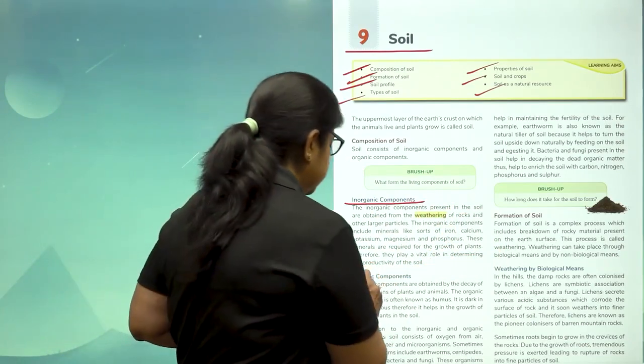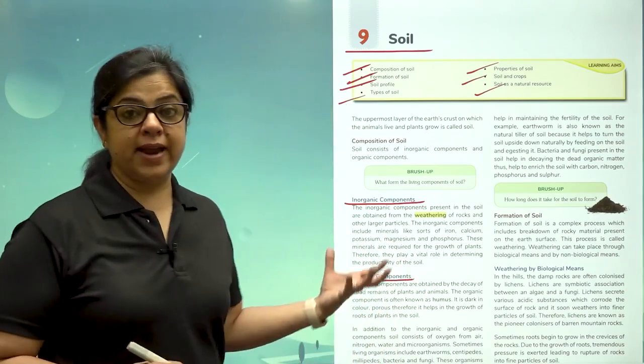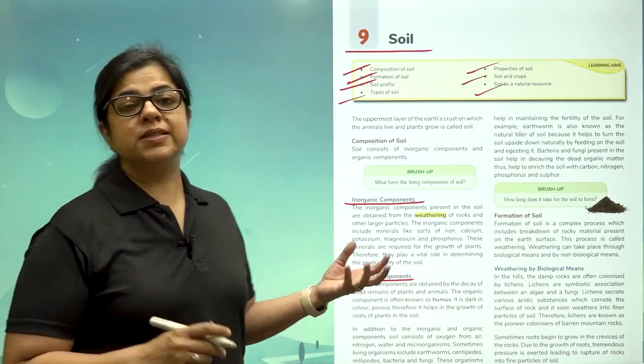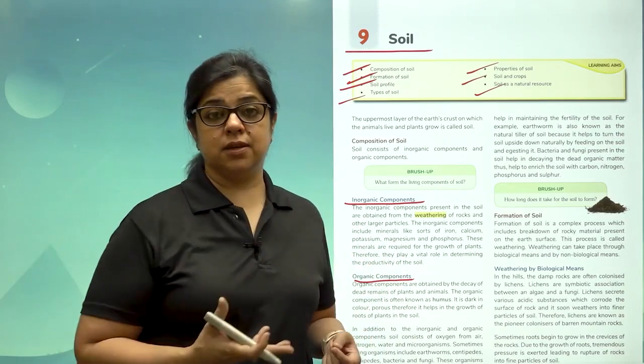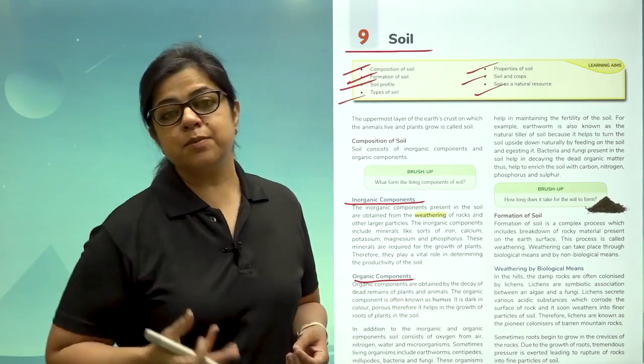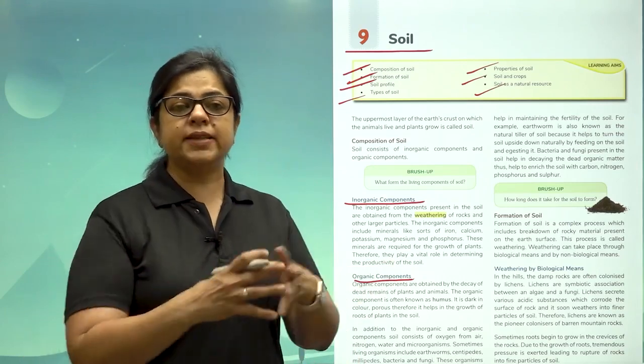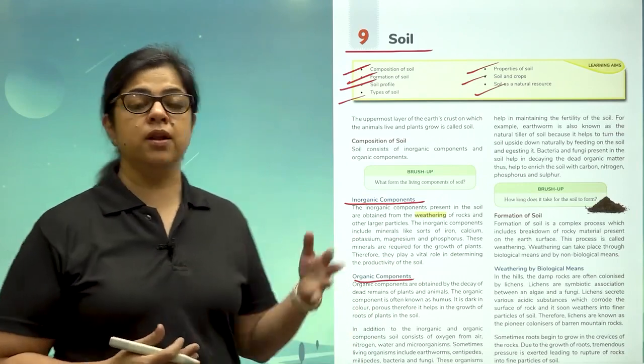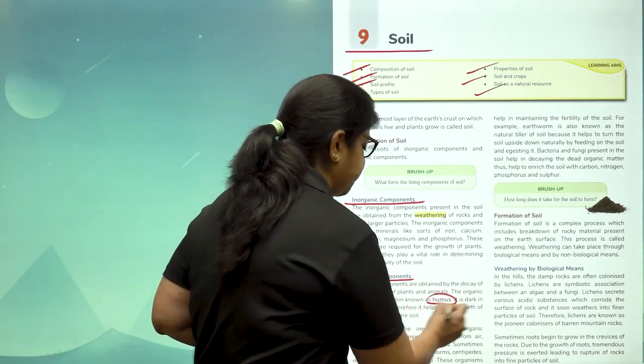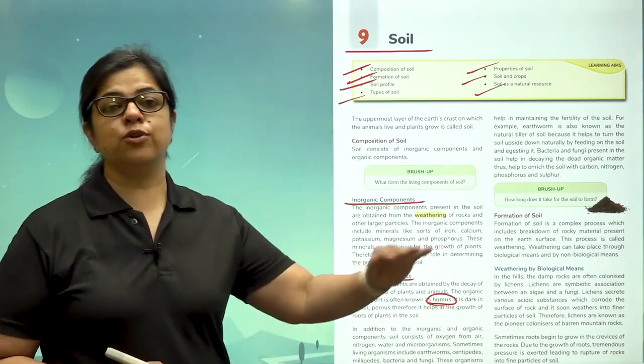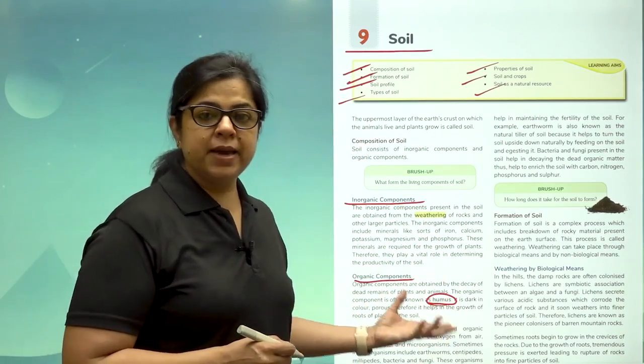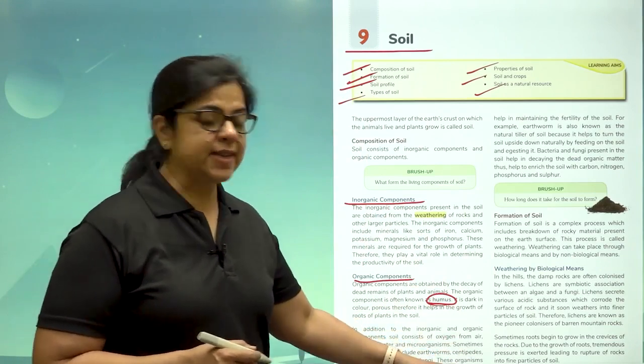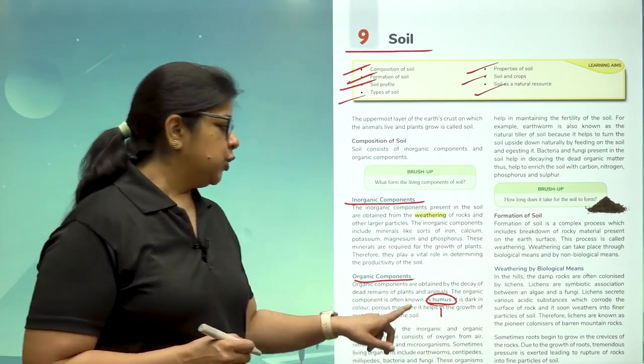Then you will see organic components. Organic means with life. So what are the components with life in it? You will see tiny leaves, earthworms, decomposing leaves. Now all these decomposing, dead decaying matter that mixes with the soil forms a very fertile layer on top of the soil which makes it capable of growing crops or plants. This layer is known as humus.